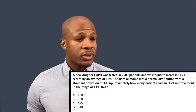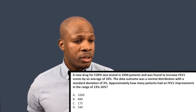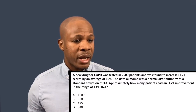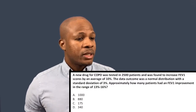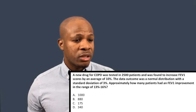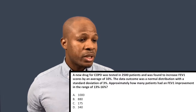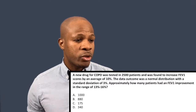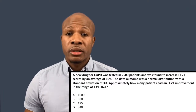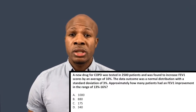Alright, let's dive into question number one. A new drug for COPD was tested in 2,500 patients and was found to increase FEV1 scores by an average of 10%. The data outcome was a normal distribution with a standard deviation of 3%. Approximately how many patients had an FEV1 improvement in the range of 13 to 16%?